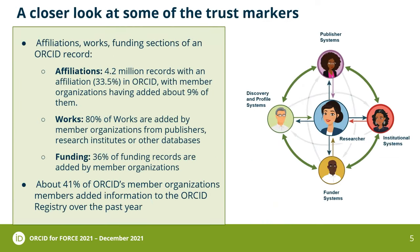Looking more closely at those trust markers — for affiliations, we now have 4.2 million records with affiliations, about 33% of ORCID, with member organizations adding around 9% of them. 80% of works in the ORCID registry are added by members — from publishers, research institutes, or different databases. For funding, around 36% of funding records are added by our members. Over the past year, about 41% of ORCID members are adding information to the ORCID registry, and we'll keep working with them.